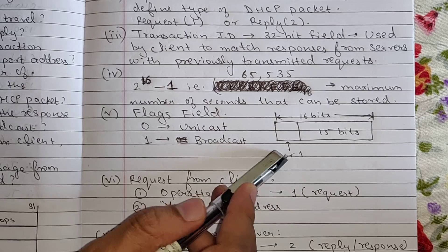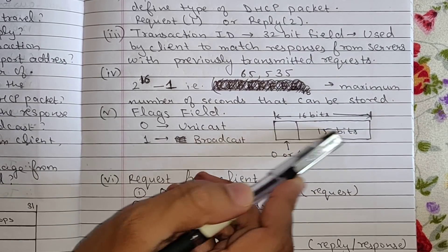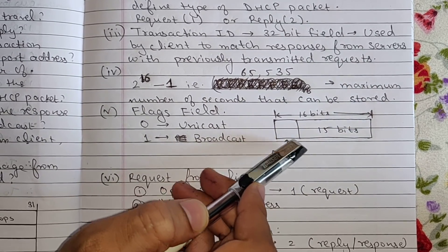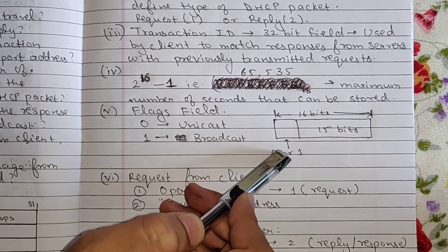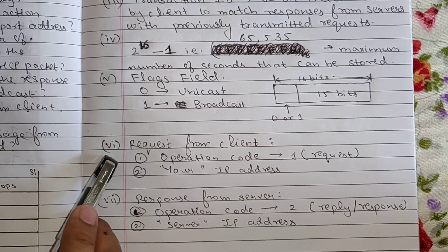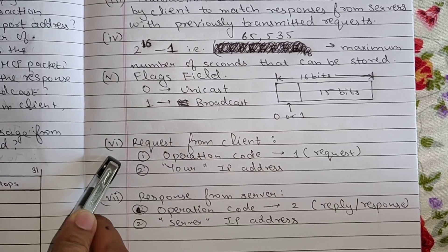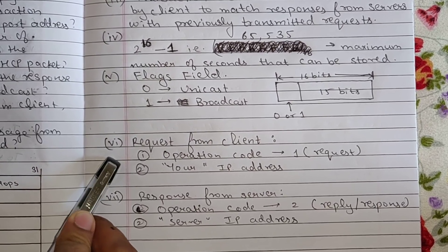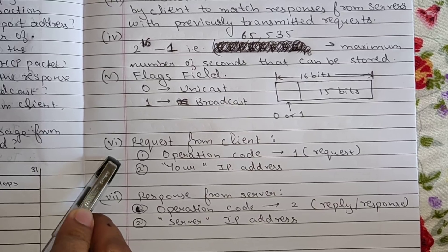So if it's 0 it's unicast, if it's 1 it's broadcast. So it will be a total of 16 bits length, that is the flags field, of which 1 bit will be to represent 0 or 1, that is unicast or broadcast, and the remaining will be used also. The next is if DHCP packet is request from client which fields are used.